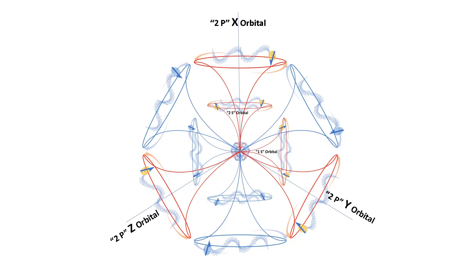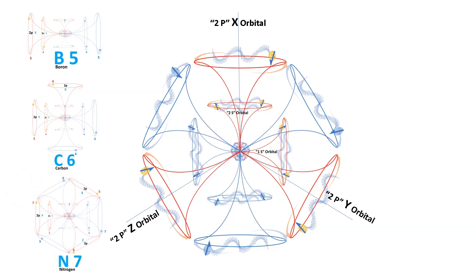This orbital assumes a unique dumbbell-like hexagonal shape. Among these three 2p orbitals, each is oriented perpendicular to the others. Visualizing this, an orange orbital extends along the z-axis.